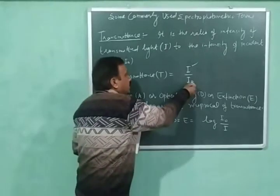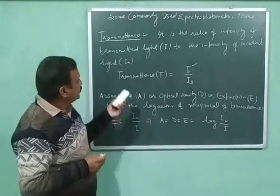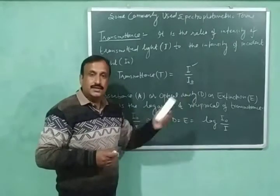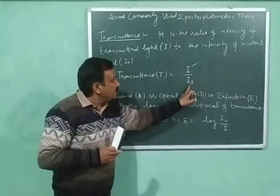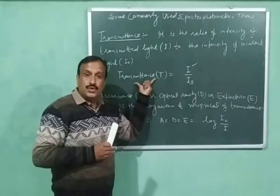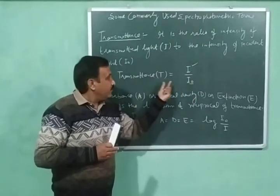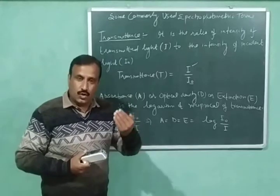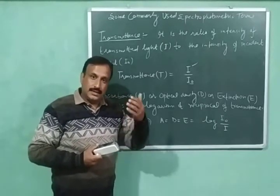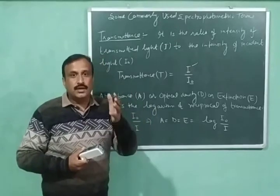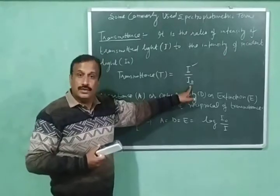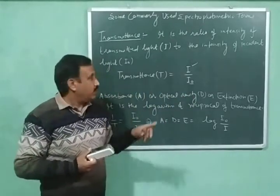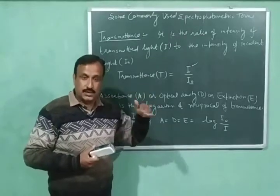We can also explain this using the intensity of incident light, because transmittance varies inversely with it. If the intensity of incident light is more, transmittance will have a lower value. According to Beer-Lambert Law, the rate of absorption is directly proportional to the intensity of incident light. So again, higher transmittance means lesser absorption, and lower transmittance means more absorption.